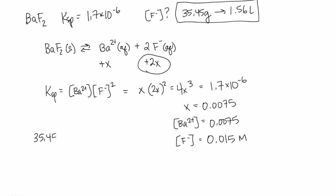So if we start with 35.45 grams of barium fluoride, it has a molar mass of 175.33 grams. So that gives us 0.202 moles. And if we have 0.202 moles in 1.56 liters, that gives us 0.13 molar.